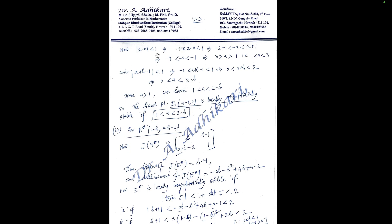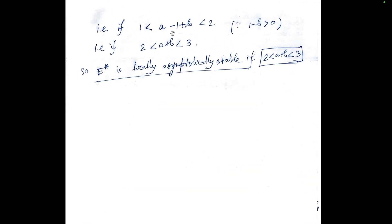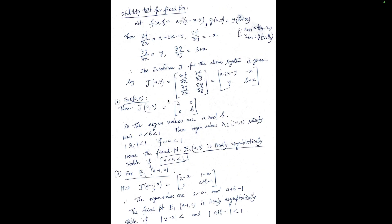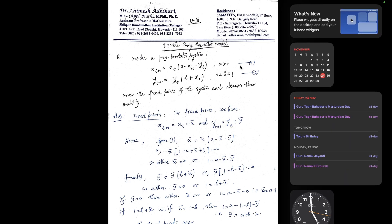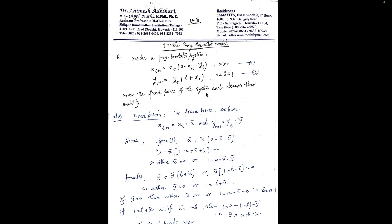After simplification and calculation, the stability condition for E* reduces to: 2 < a + b < 3. Therefore E* is locally asymptotically stable if 2 < a + b < 3. This completes the analysis of the discrete prey-predator model.